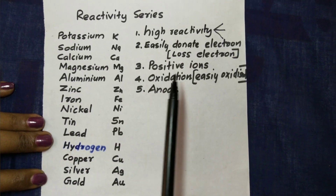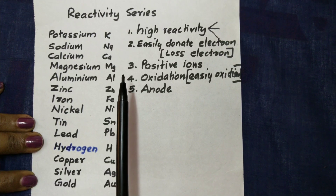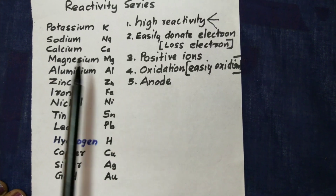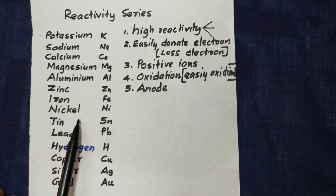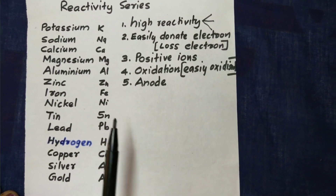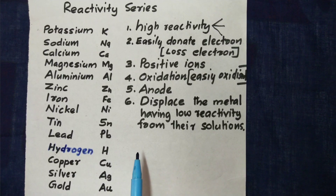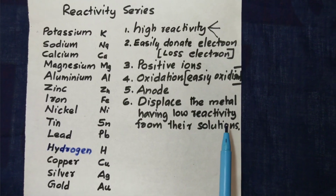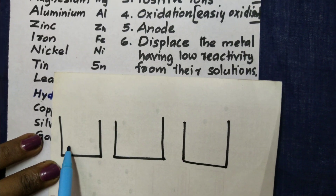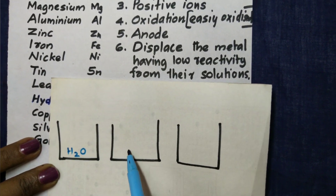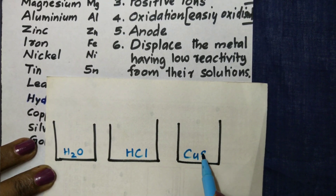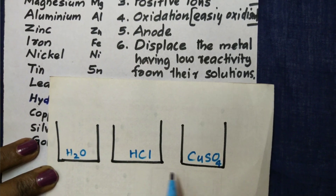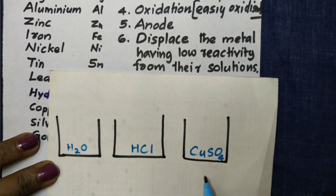Because of high reactivity, these metals can displace metals having less reactivity from their solutions. We will demonstrate displacement. The top elements can displace others from H2O (water), HCl (acid), and CuSO4 (copper sulphate solution) — water, acid, and solution. We will use sodium as an example.